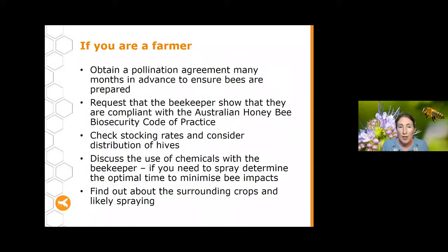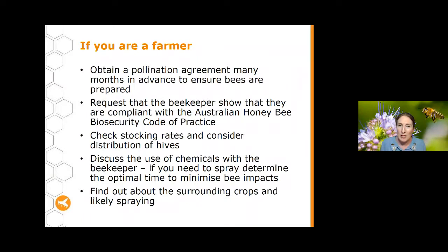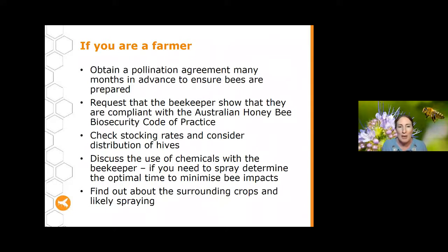If you're a farmer, make sure you obtain a pollination agreement quite a few months in advance — the beekeeper may need several months to build their bees up to the right levels. Request that your beekeeper show they're compliant with the Australian Bee Biosecurity Code of Practice. Check your stocking rates and consider the distribution of hives before approaching a beekeeper so you have some idea of what you might need. Discuss the use of chemicals with the beekeeper — let them know when you're going to spray and how you plan to do it. Also find out about surrounding crops and when they might be sprayed, as that's really helpful information for your beekeeper.